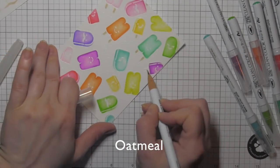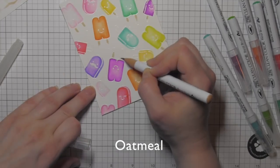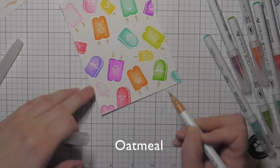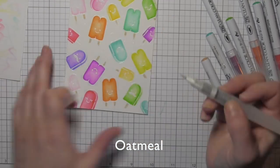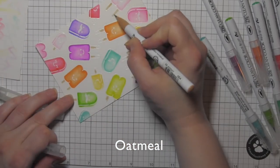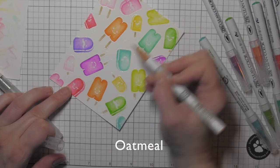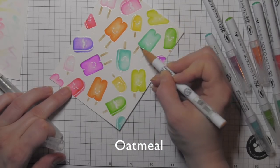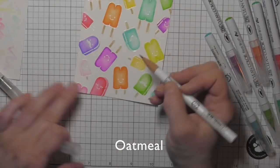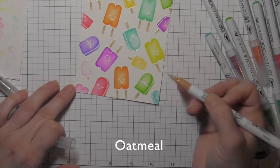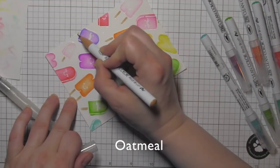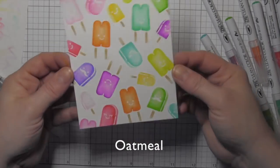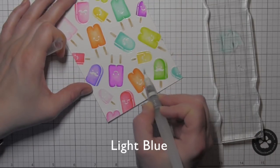I'm going in now with my oatmeal Zig Clean Color Real Brush marker and coloring the popsicle sticks. Originally I just colored in a little bit and I thought I would blend them out with the water brush marker, but I found that I didn't really think that I liked that. So I'm going to go in with my marker and completely color in the popsicle sticks with my marker, and I like that a lot better. It's a lot darker, a lot more prominent.